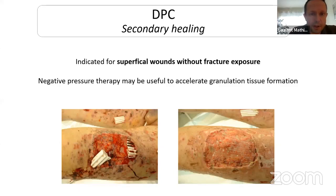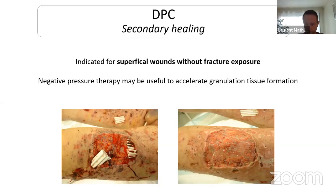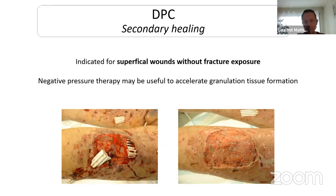Secondary healing of the wound is particularly indicated for superficial wounds without fracture exposure — typically a patient with secondary blast injury with multiple soft tissue injuries but no fracture. In this case secondary healing is most of the time sufficient, but it can take time. To accelerate granulation tissue formation you can use negative pressure therapy. This is a good indication for negative wound therapy.